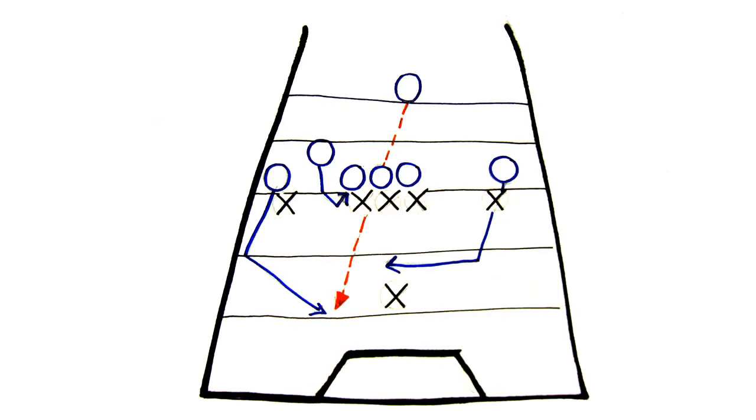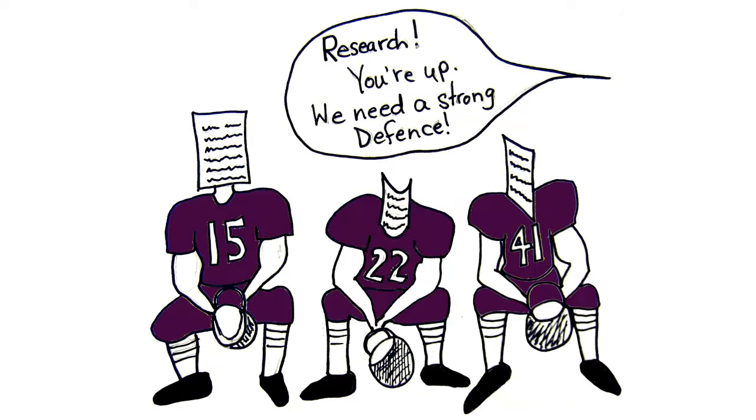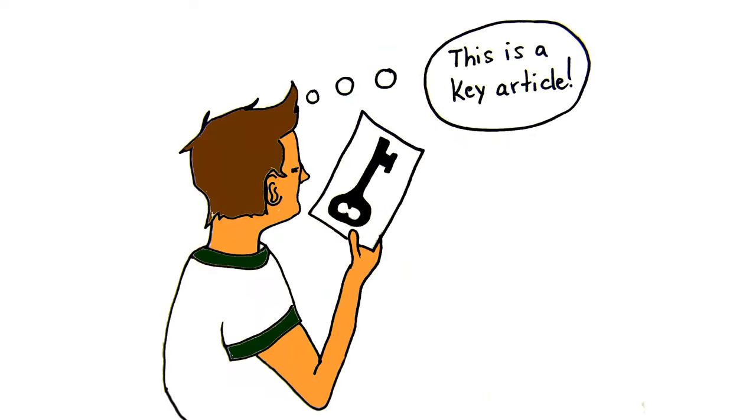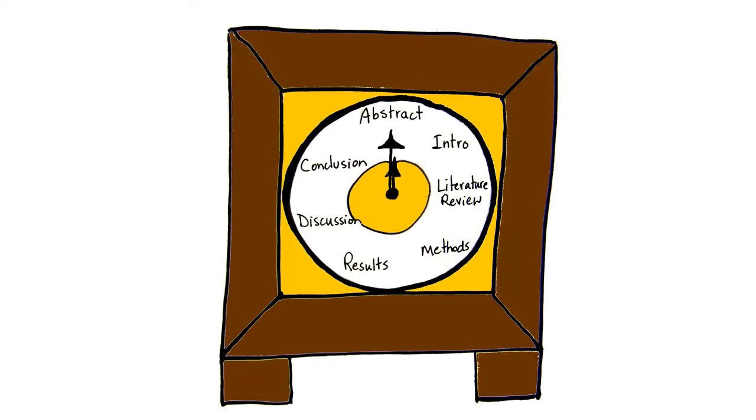The literature review section helps to position this new research into an existing context by revealing the other research that has been published on the topic. At this point, if you still think that the article is relevant to your research, re-read the entire article a second time in chronological order.